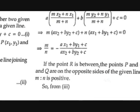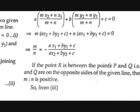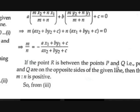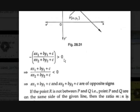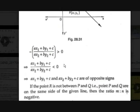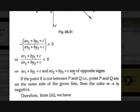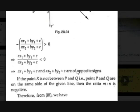If point R is in between the two points P and Q, then P and Q are on opposite sides, and the ratio M:N would be positive. So −M/N > 0, meaning −(AX1+BY1+C)/(AX2+BY2+C) > 0, which implies (AX1+BY1+C)/(AX2+BY2+C) < 0. That means AX1+BY1+C and AX2+BY2+C are of opposite signs.